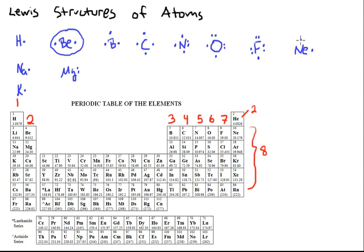Neon and the other noble gases below it on the periodic table have eight valence electrons, 1, 2, 3, 4, 5, 6, 7, 8. Alright everybody, thanks for watching, see you next time.